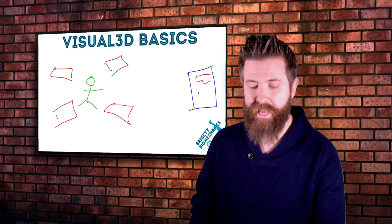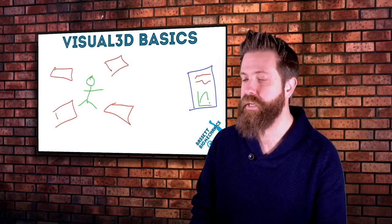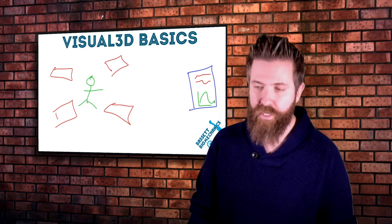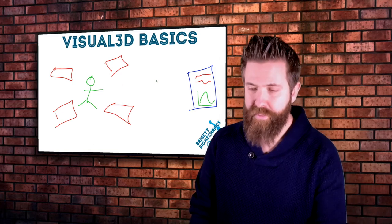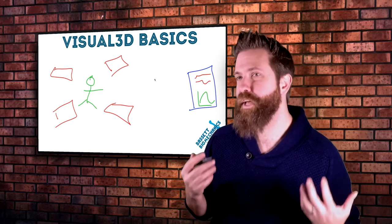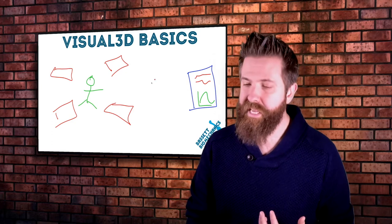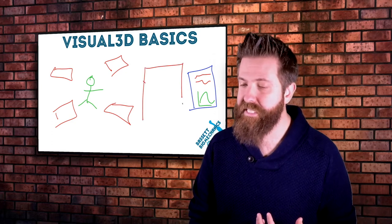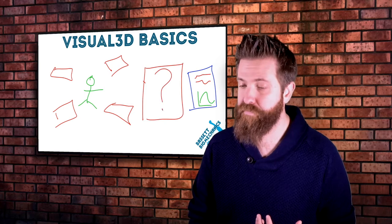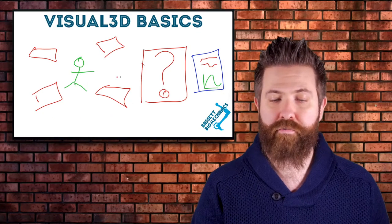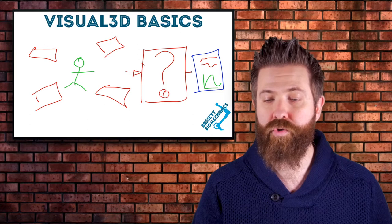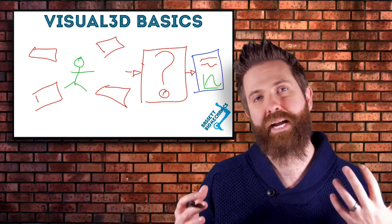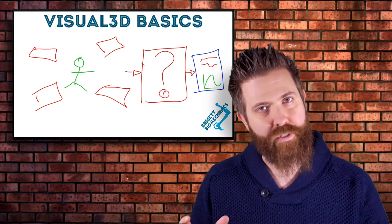You may have different parameters that you're measuring, some graphs that you're trying to get out. The problem that ends up arising is there is a disconnect right here. How do we get from the motion capture data to our actual biomechanical data?